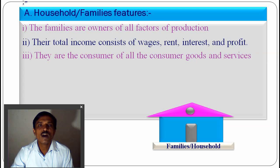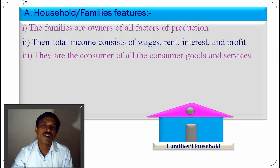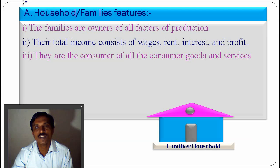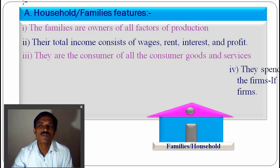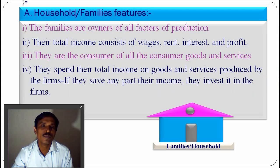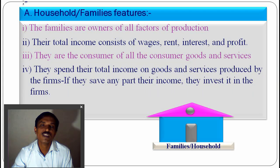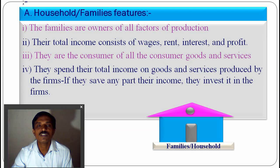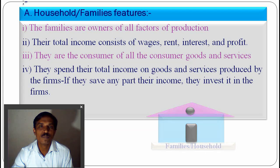Families consume all consumer goods and services produced by the businesses and firms. Families, as owners of the factors of production — land, labour, capital — receive remuneration and rewards in the form of wages, rent, interest, and profit. They spend their total income on goods and services produced by the firms. If they save a part of their income, they invest it in the firms.